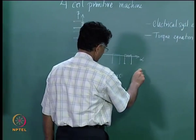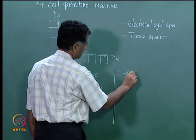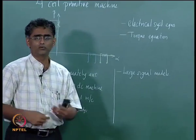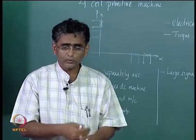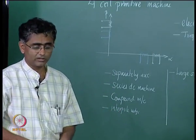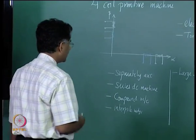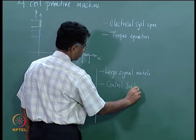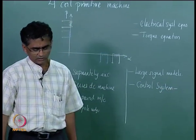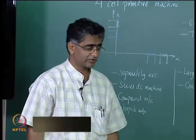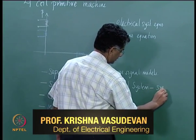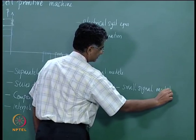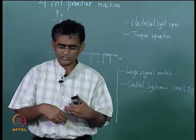We saw that these machine equations are basically what is called large signal models, in the sense that one can apply a fairly large DC voltage, a fairly large torque on the shaft, and we expect that the equations we have derived enable us to determine how the machine is going to behave. But a large class of applications fall under control system applications where it is not really useful to have large signal representations — we would rather have small signal models which enable us to get a linearized system description useful to design a closed-loop control system.